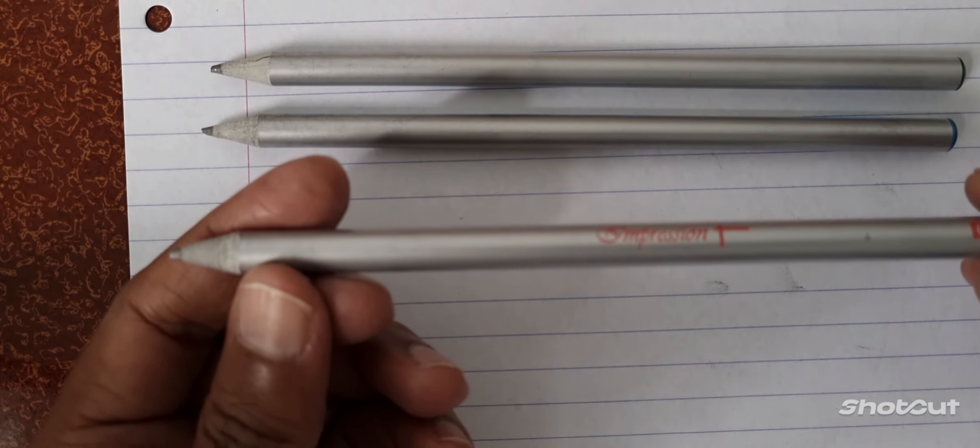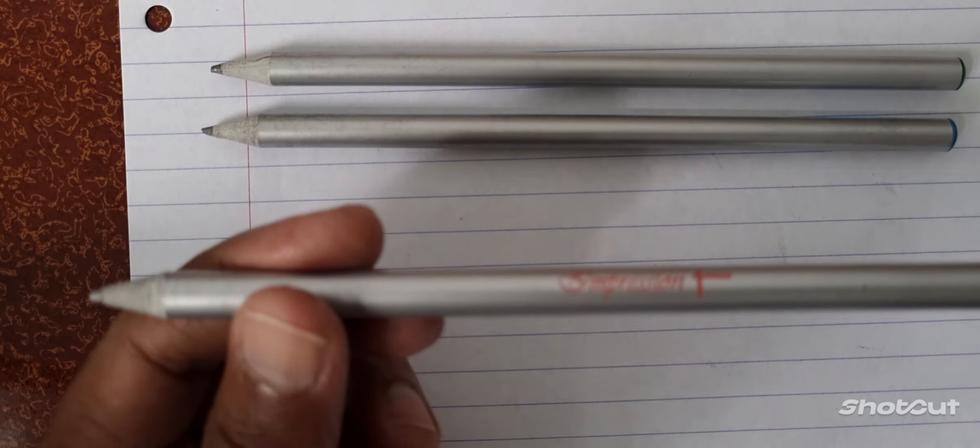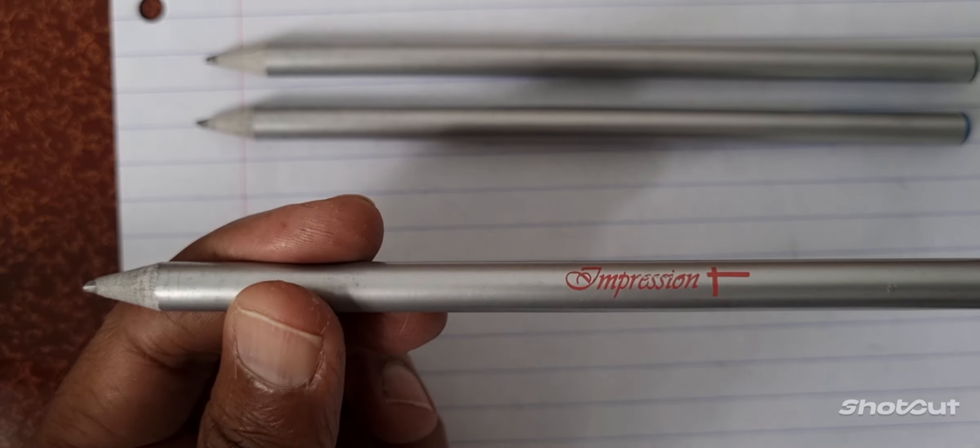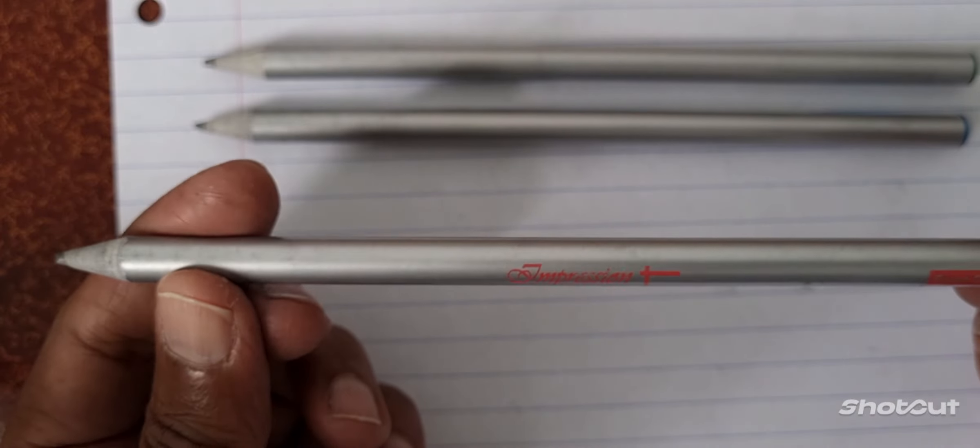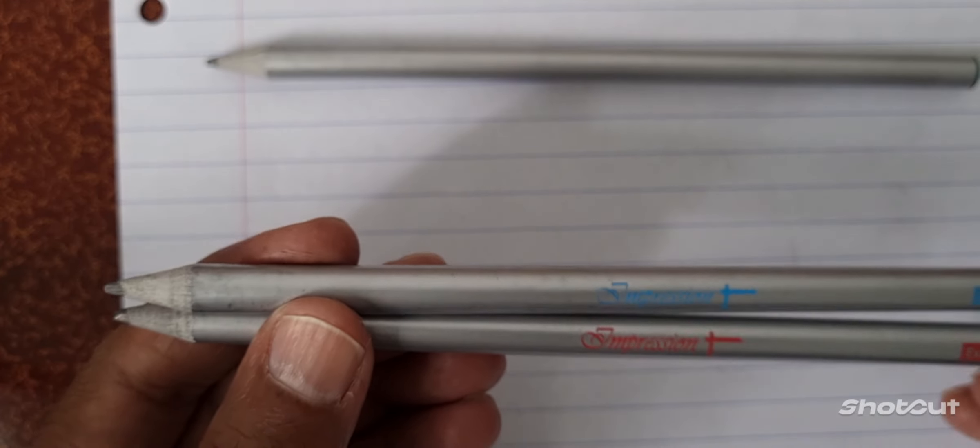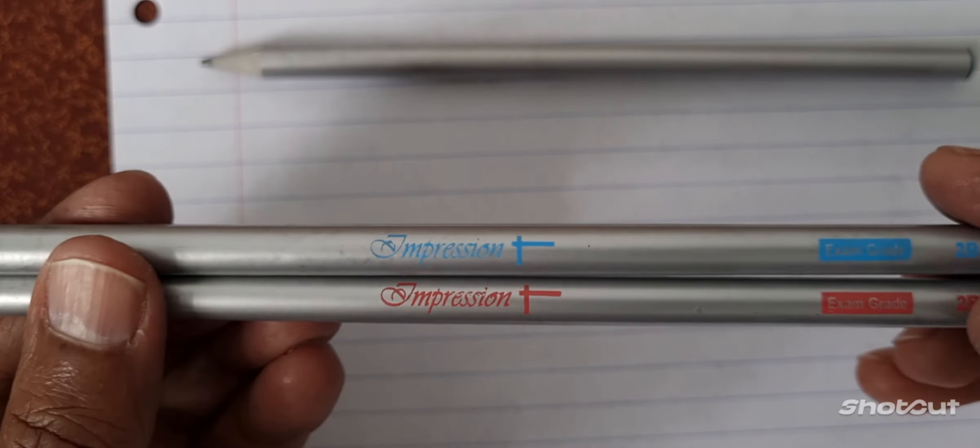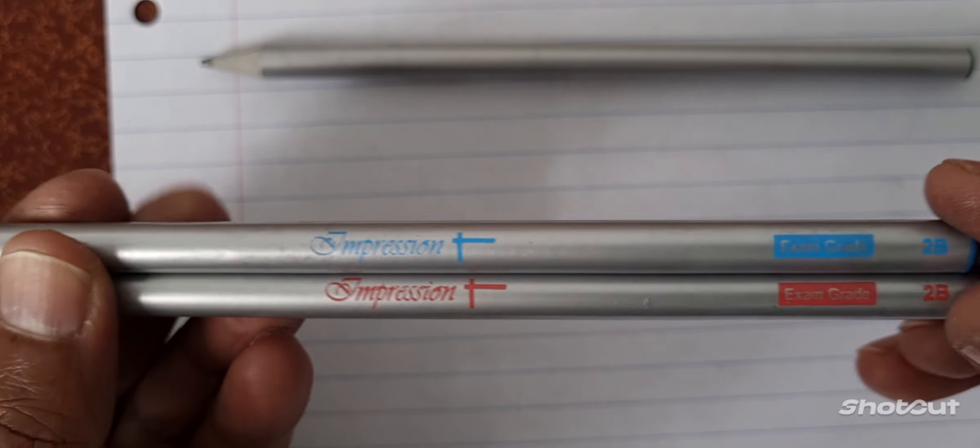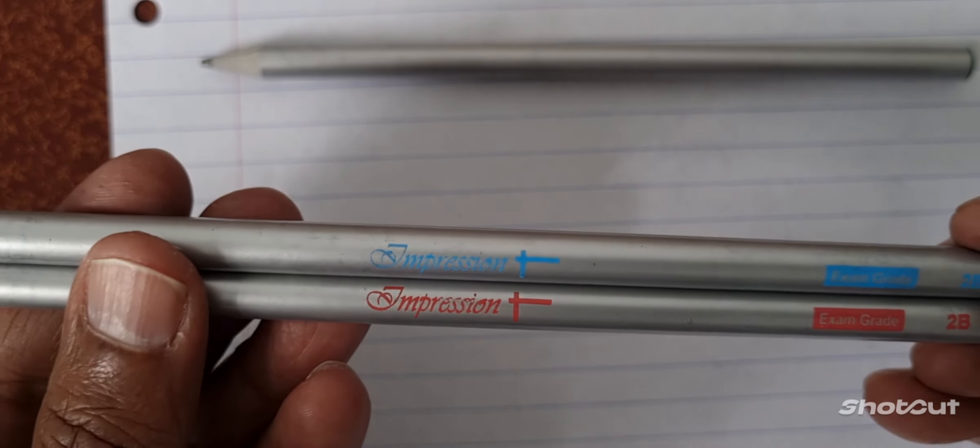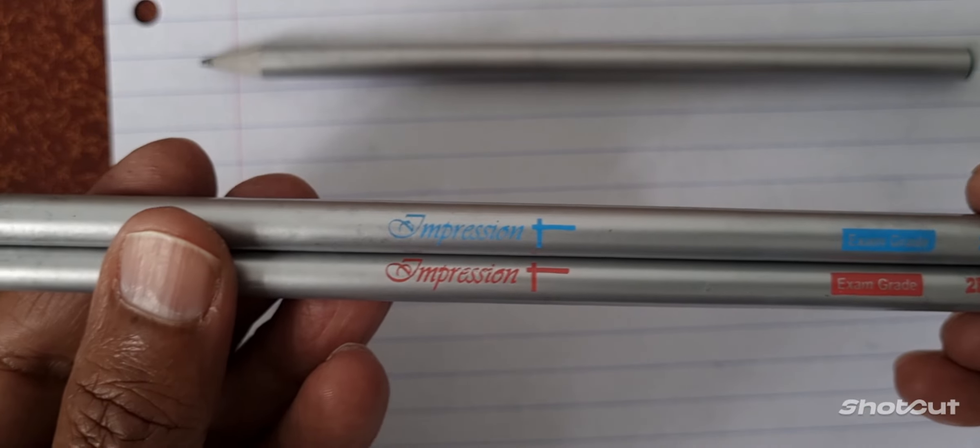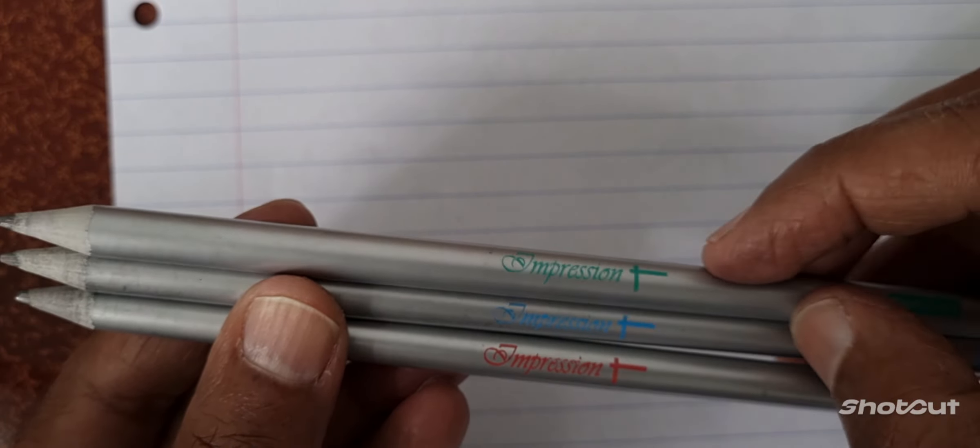Sorry about that, just trying to get this thing in focus. There we go. It says here Impressions. Let's check the blue one. That's it again, we've got something there. Exams gradient 2B. The different colors, I suppose, are just for Impressions.